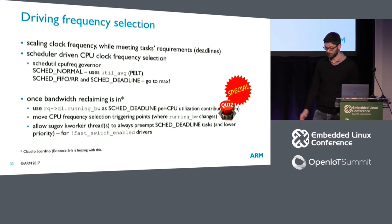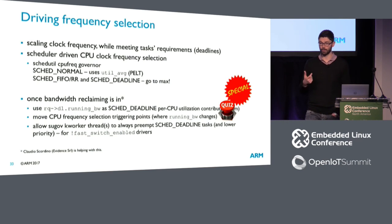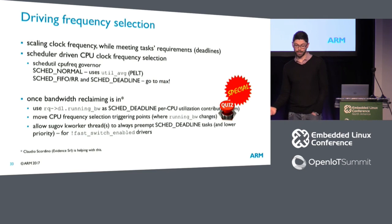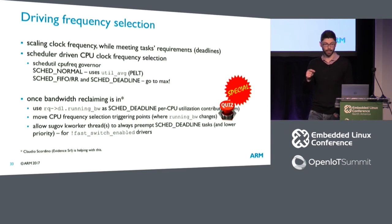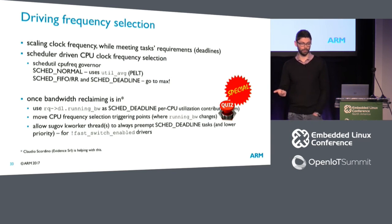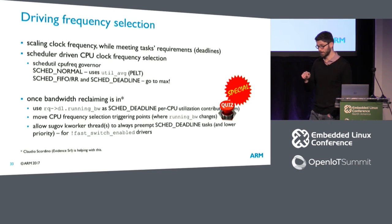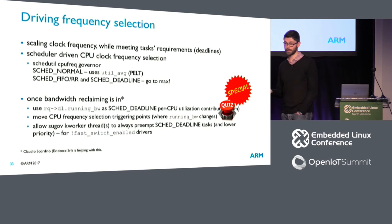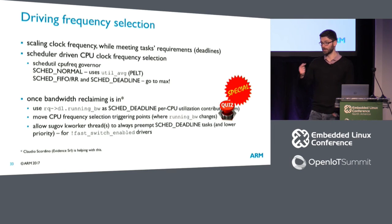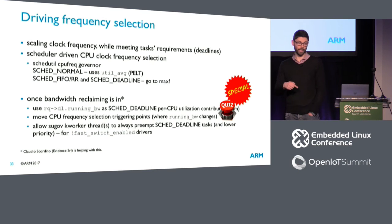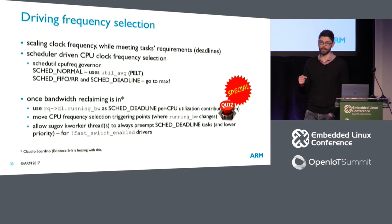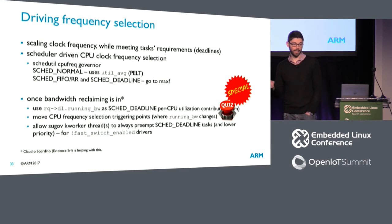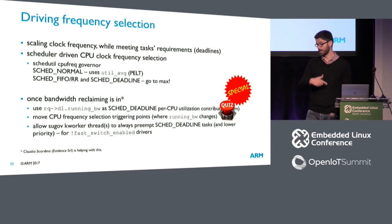Another required modification: on platforms that need a sleepable context to change frequency — like ARM platforms — a kworker thread is needed to actually call the driver and perform the frequency switch. That thread is currently a SCHED_FIFO thread. If you want to change frequency for a Deadline task, that thread must also be made Deadline, possibly with the highest priority so it can always preempt other Deadline tasks to change frequency in time.